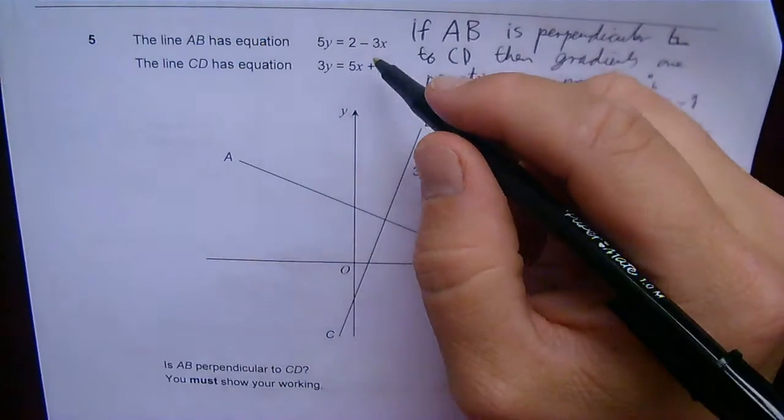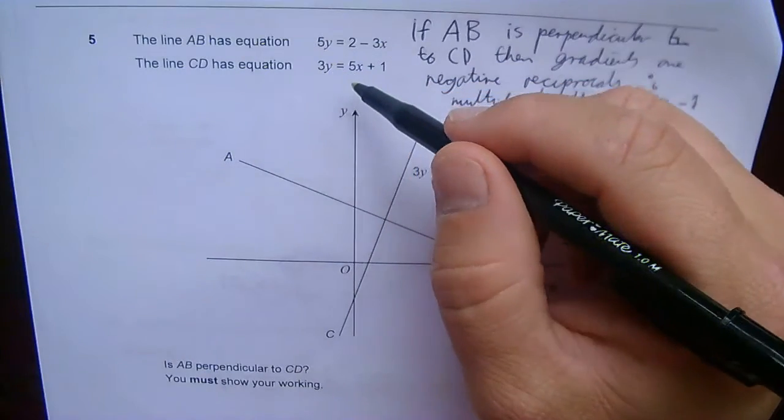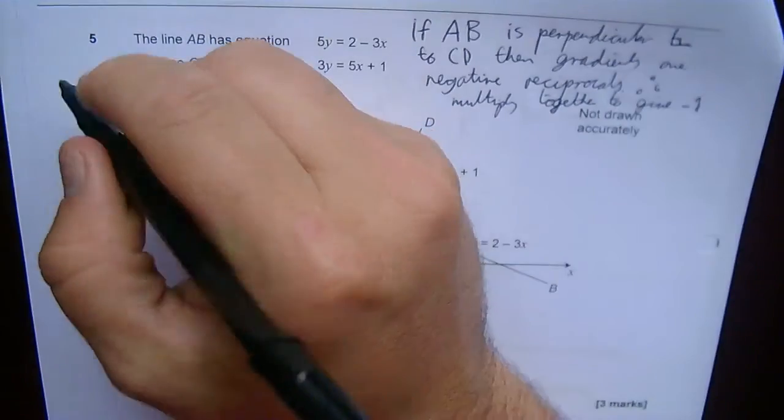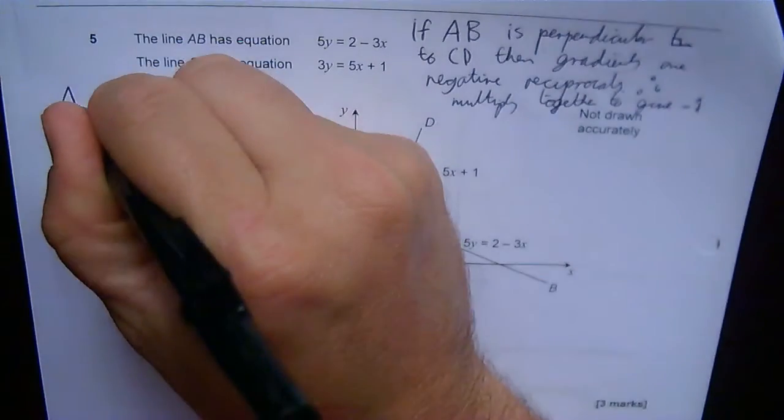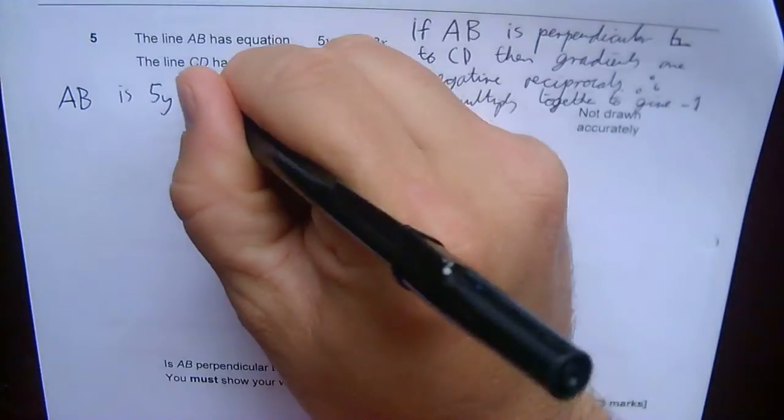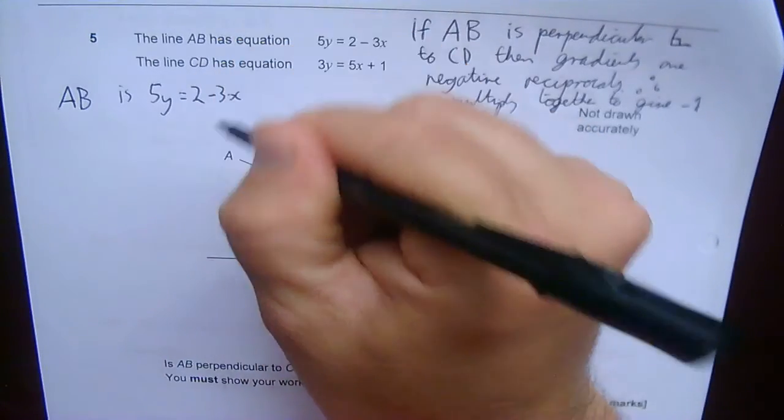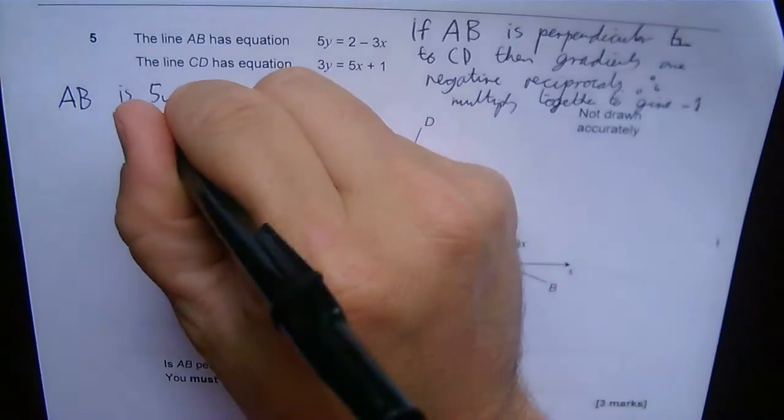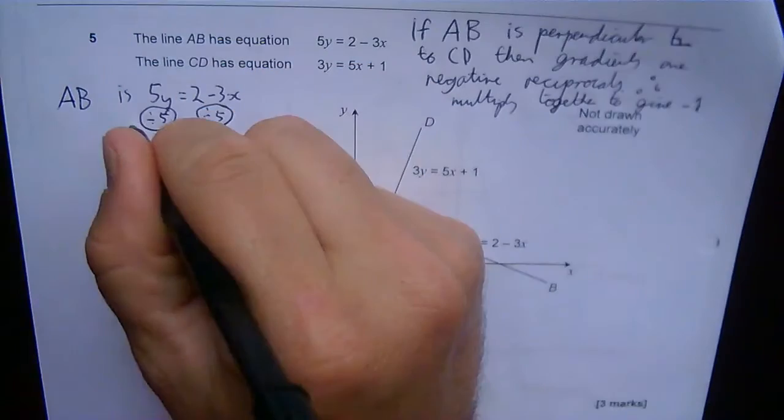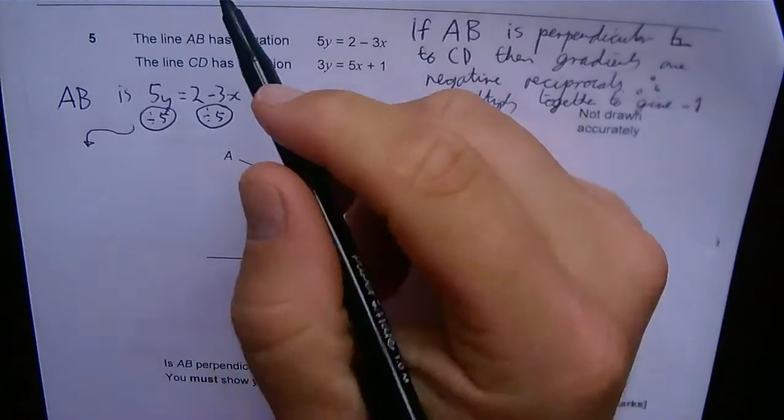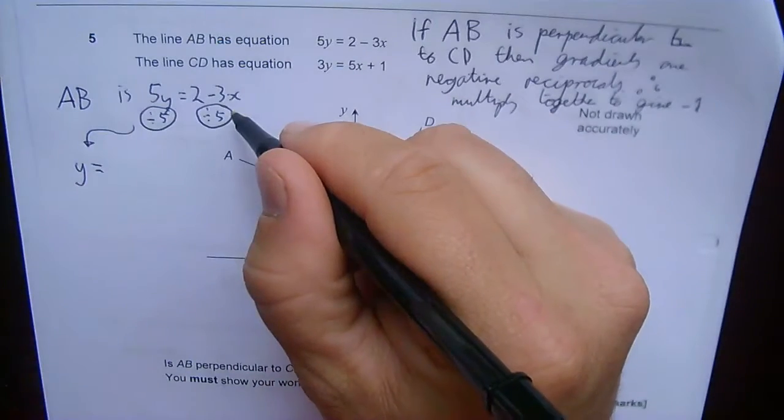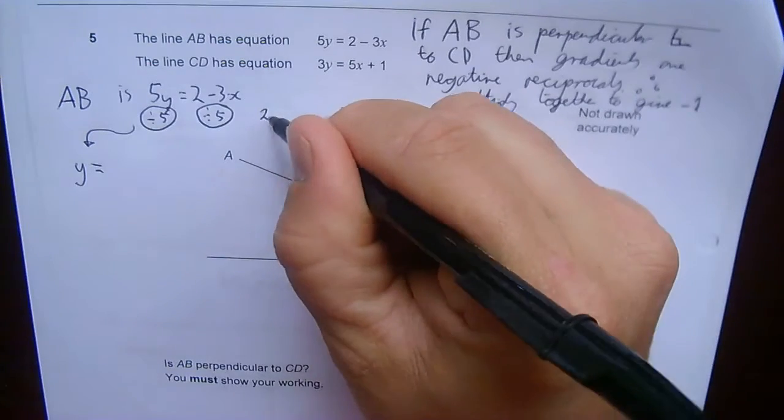I will rearrange these into y = mx + c format to see the gradients clearly. Let's take AB first: AB is 5y = 2 - 3x. To rearrange this, divide both sides by 5. So 5y divided by 5 gives y.